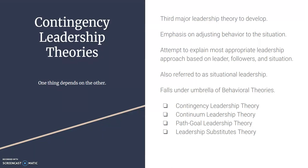Contingency theory is an attempt to explain the most appropriate leadership approach based on the leader, the followers, and the situation. It was developed because trait theory and behavior theories don't address the environmental factors — specifically, how a situation affects behaviors and what behavior a leader can select to handle the situation effectively.